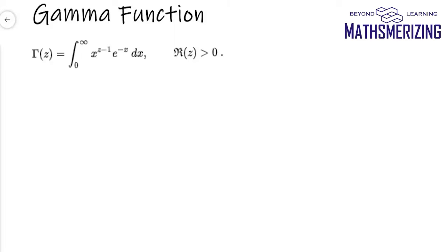All of us have studied factorials. One of the commonly used extensions to define the factorial function is the gamma function. The gamma function is represented by the capital letter gamma from the Greek alphabet, and it is defined as the integral from 0 to infinity of x to the power z minus 1 into e to the power minus x dx. Now we'll explore how this function is related to factorials.